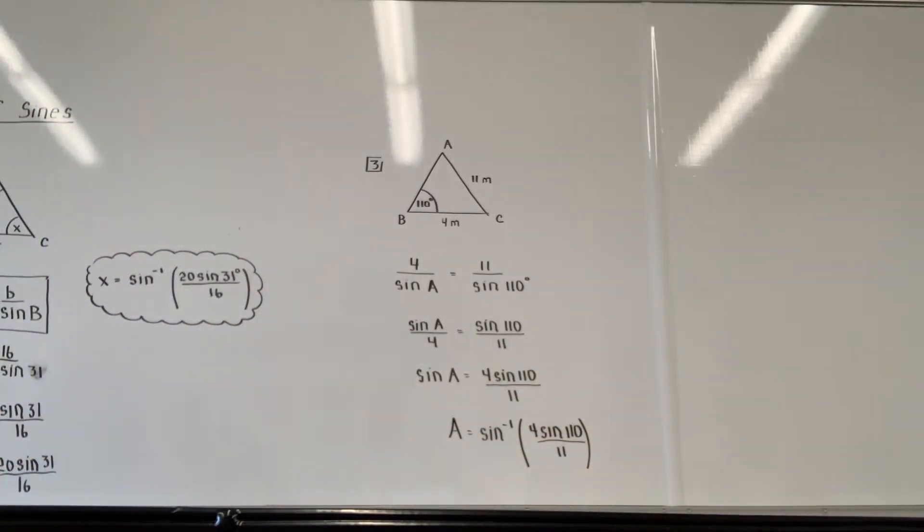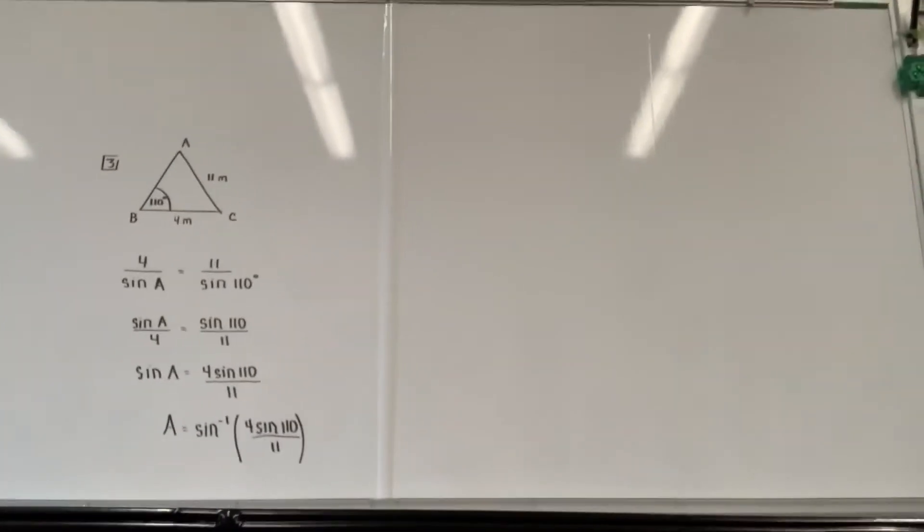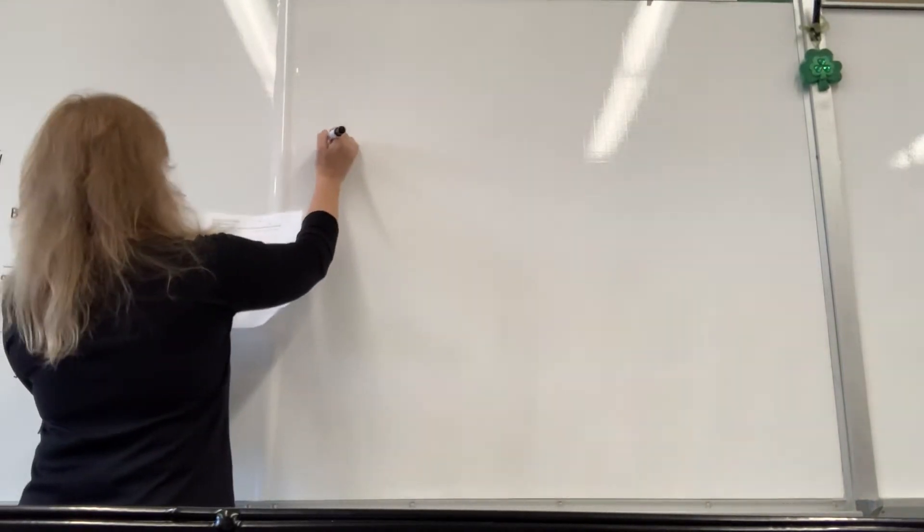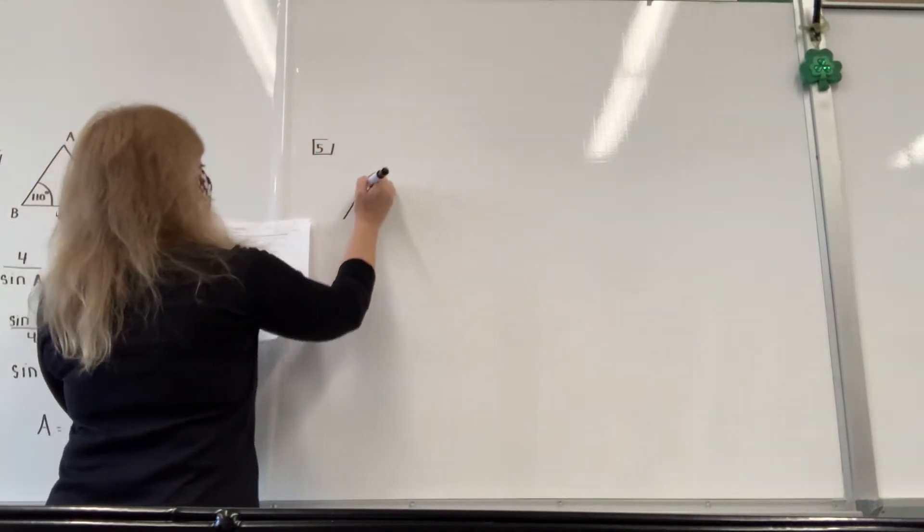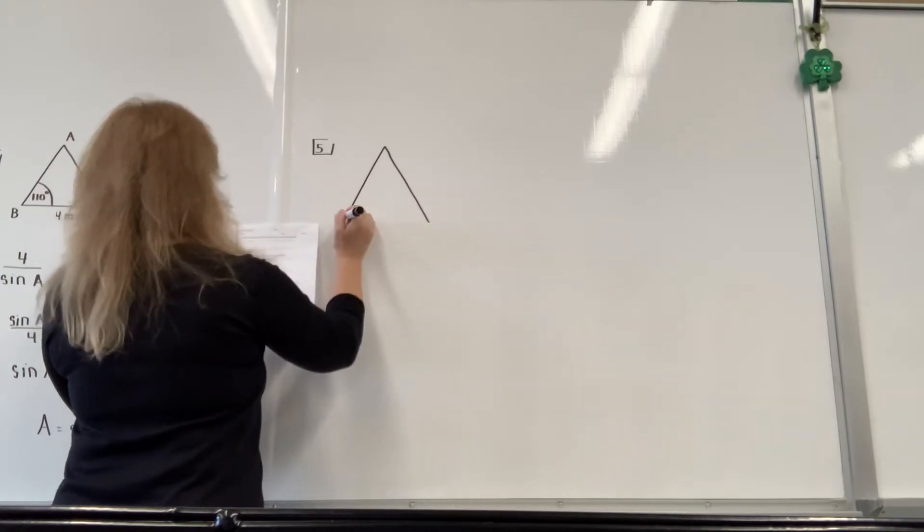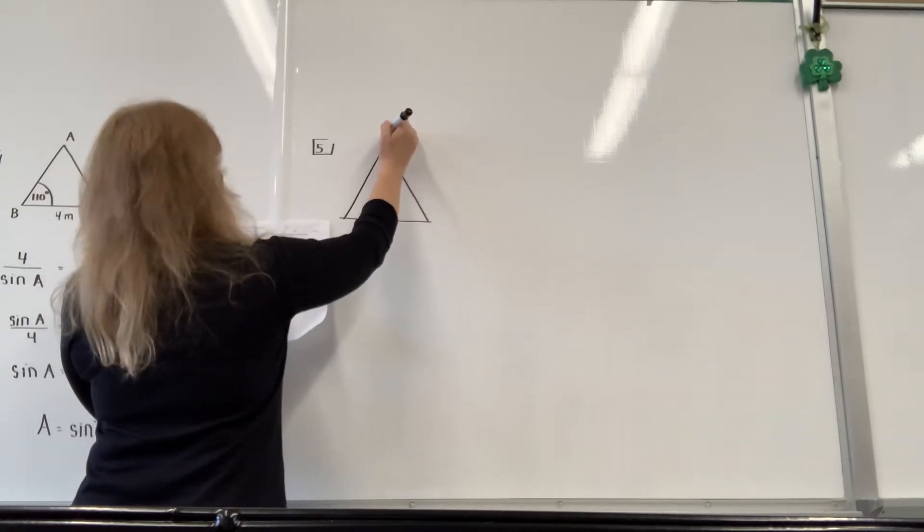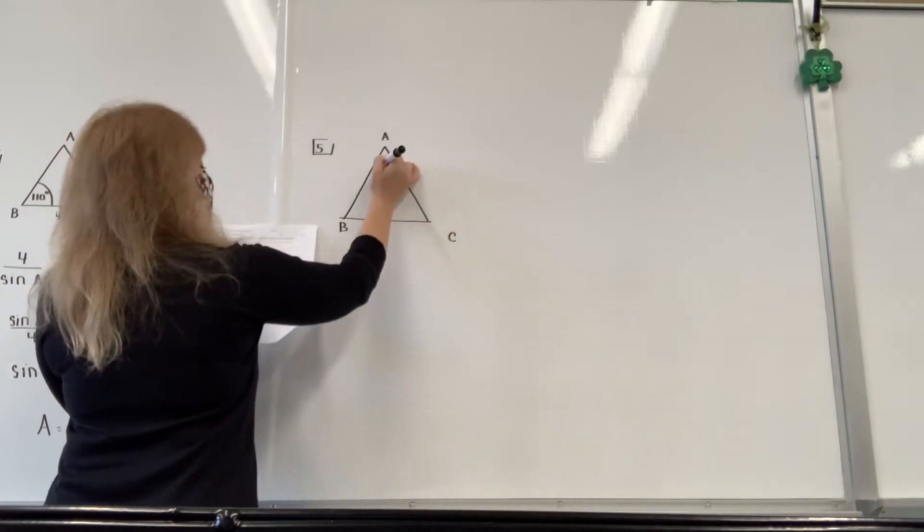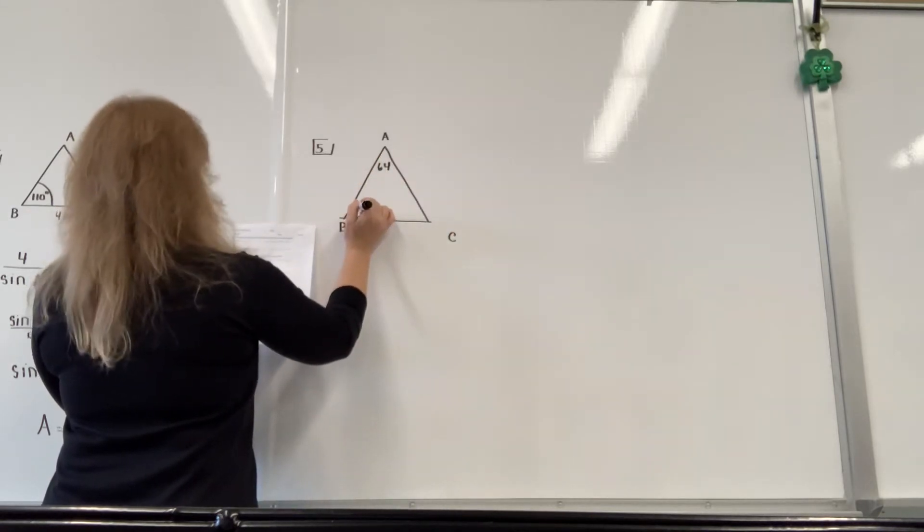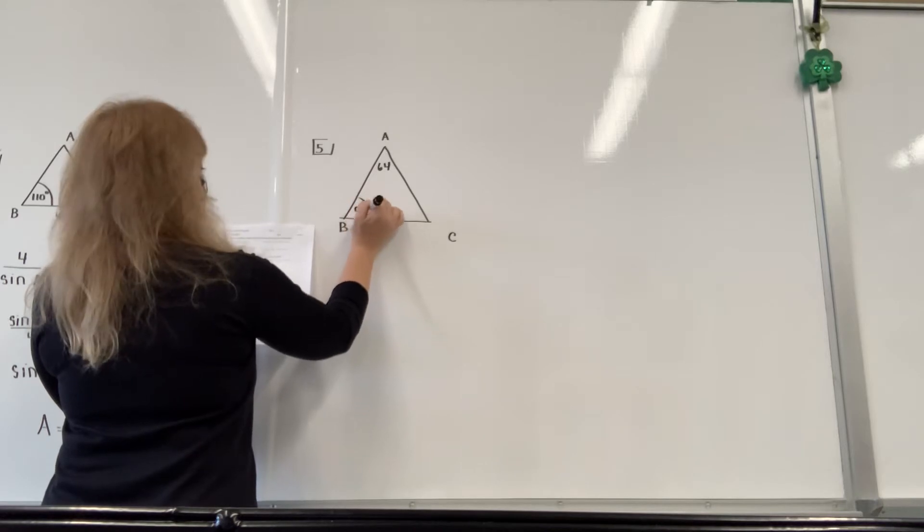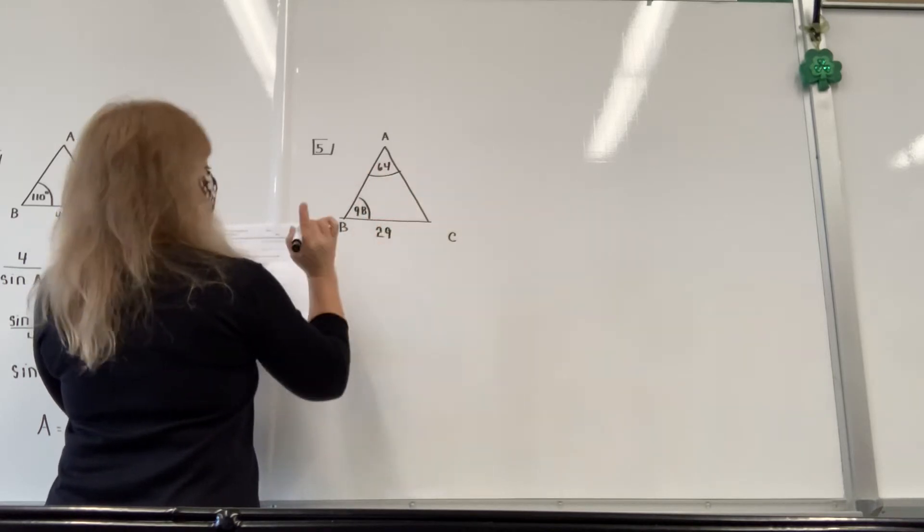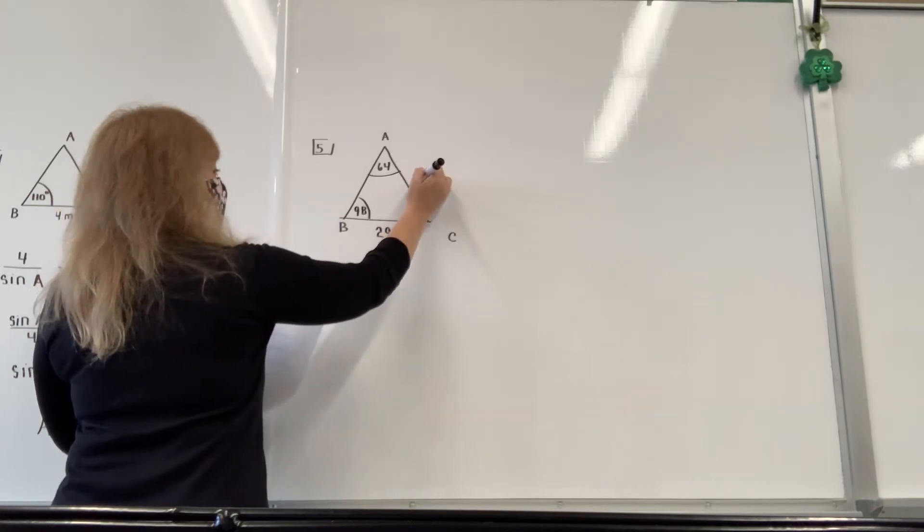All right, we're going to go to number 5. I'm going to try to upload, see if I can get them back on in a moment. All right, number 5, triangle ABC. They don't draw it for me, so any way would be fine. Capital A is 64 degrees. Capital B is 98 degrees. And lowercase a is 29 miles. Find lowercase b. So I'll just put a b there.